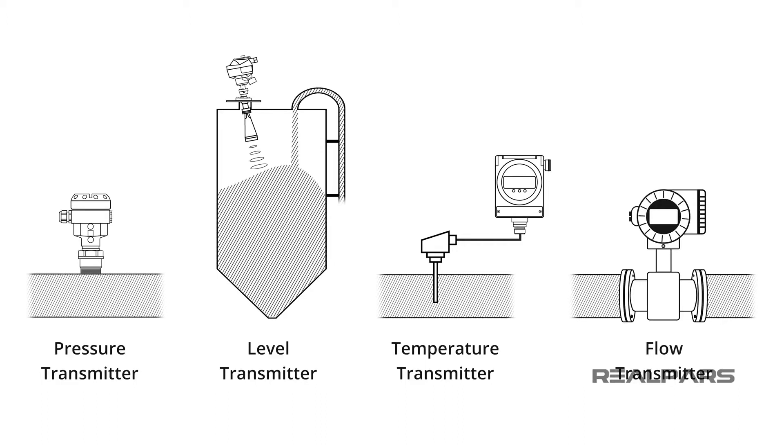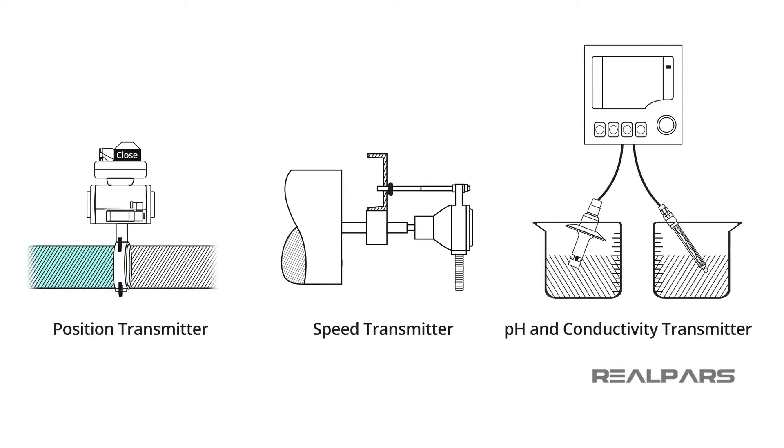The four major process variables measured and represented by a transmitter are pressure, level, temperature, and flow. Transmitters are also used in industry to measure other variables such as position and speed, and chemical properties such as pH and conductivity.